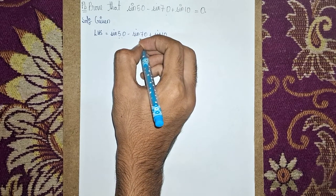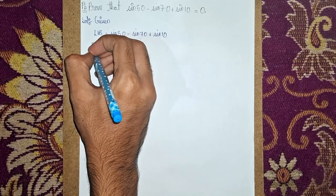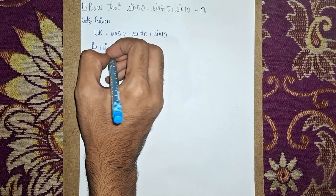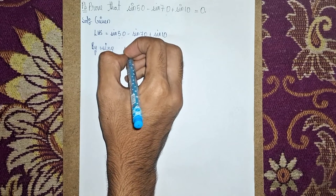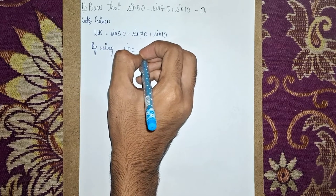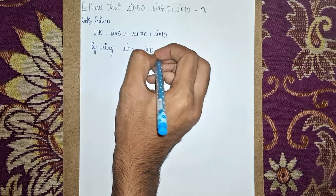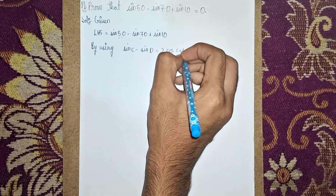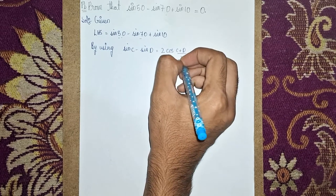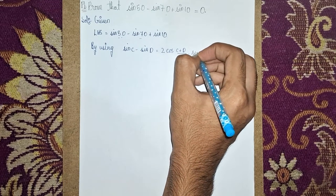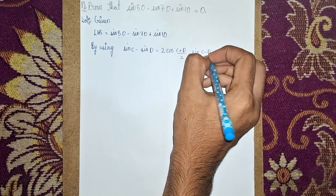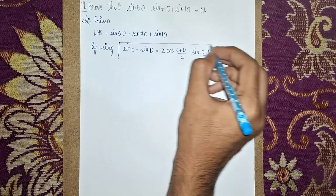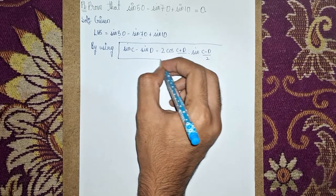By using the transformation formula: sin C minus sin D equals 2 cos((C plus D) over 2) times sin((C minus D) over 2). I'm highlighting this formula by making a box around it for good presentation.